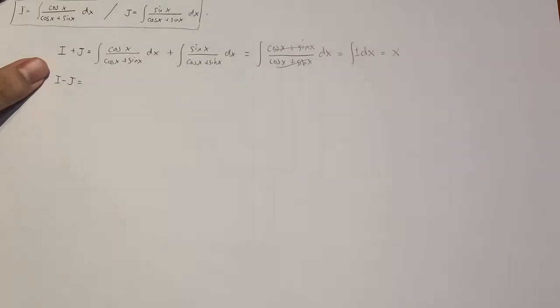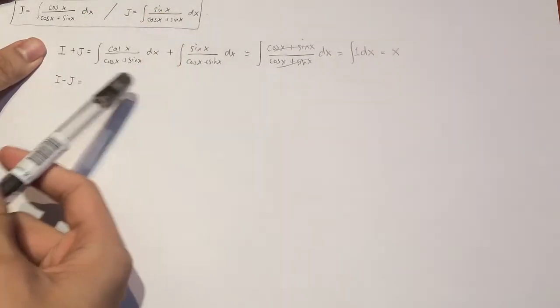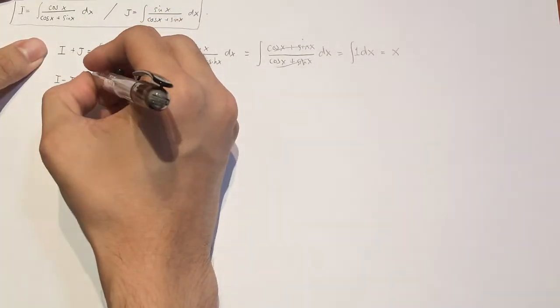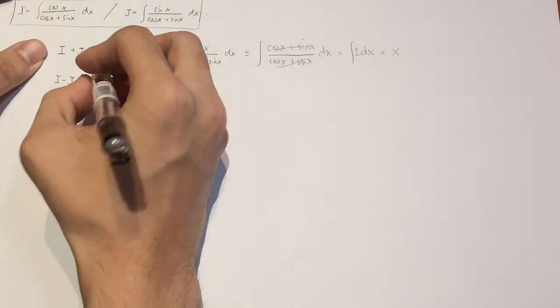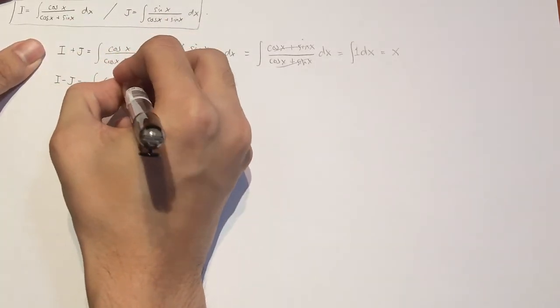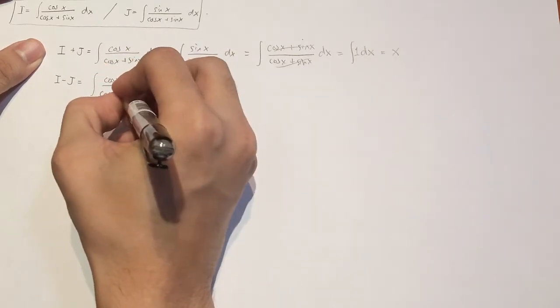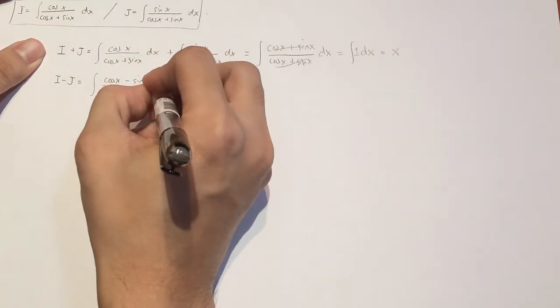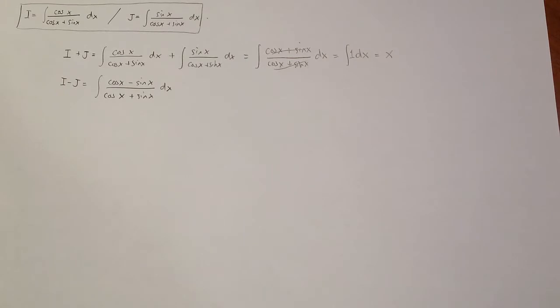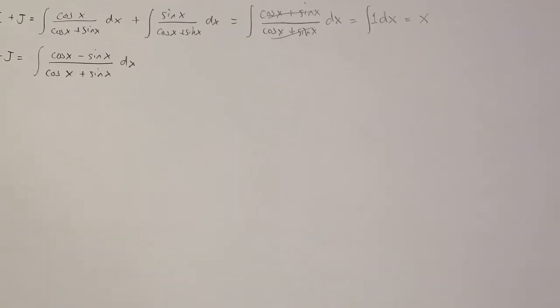So now what we can try to do is subtract i with j. What do we get there? Now this one is in fact a bit trickier, but we're just going to skip the subtracting bit. And what you're going to get if you try to subtract this, you'll get cos x minus sin x divided by cos x plus sin x dx. Now this part is where you actually need to be able to see something really interesting. And so because we need to see, I'm just going to zoom in a bit.